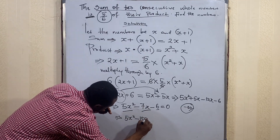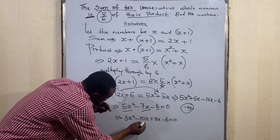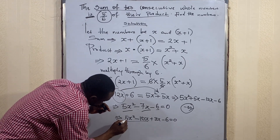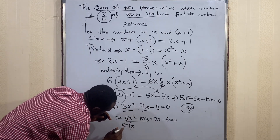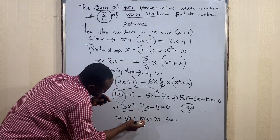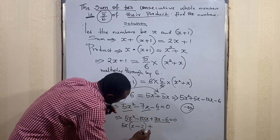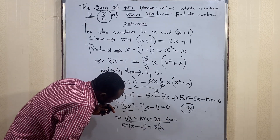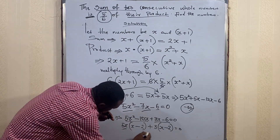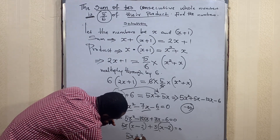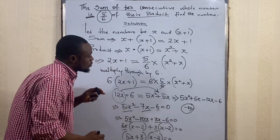We rewrite the middle term: 5x² − 10x + 3x − 6 = 0. Factoring the first pair: 5x is common, giving 5x(x − 2). Factoring the second pair: 3 is common, giving +3(x − 2). The terms outside the brackets form a new bracket: (5x + 3)(x − 2) = 0.